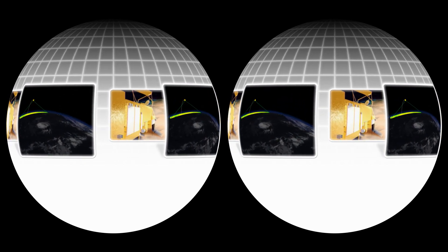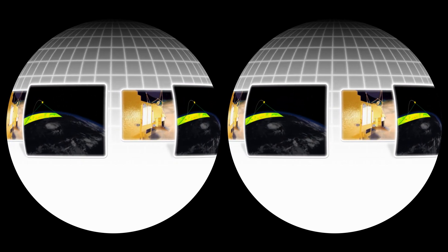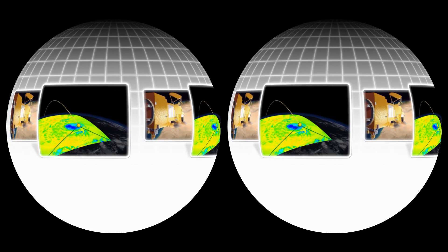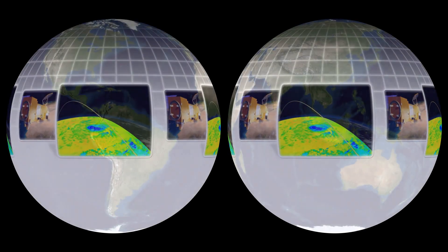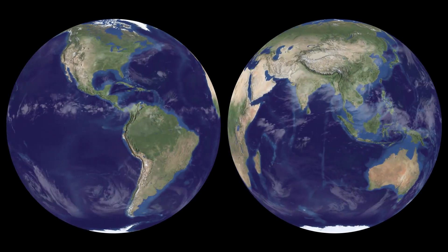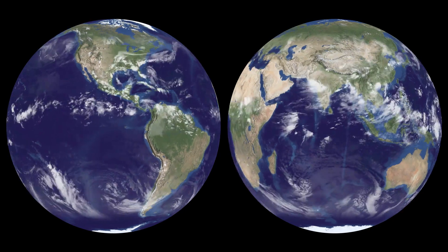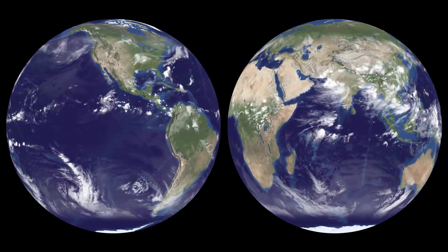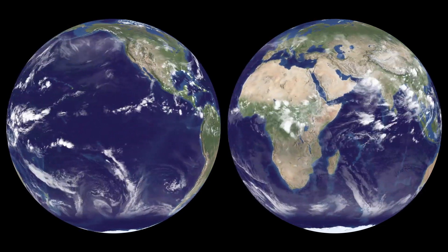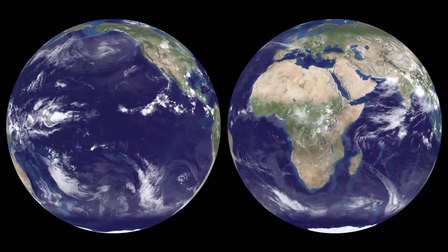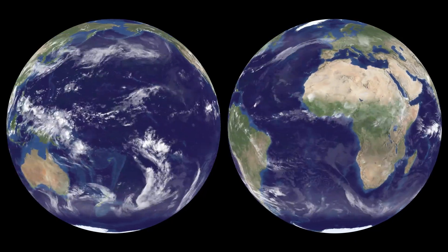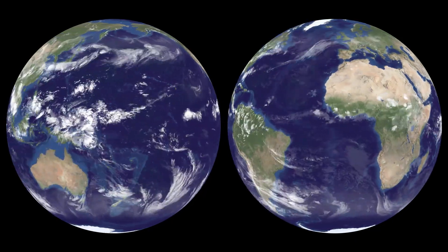Satellites that collect infrared images allow us to look at Earth's temperatures on a planetary scale. Bright regions on the Earth, like clouds, reflect sunlight back into space, helping to keep them cool.